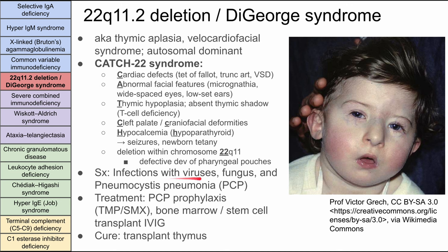Symptoms include recurrent infections with viruses, fungus, and PCP — similar to an AIDS picture because they have the same T cell deficiency. Treatment includes PCP prophylaxis with Bactrim, bone marrow or stem cell transplant, and IVIG as well. The cure is to transplant the thymus, essentially replacing what they are missing.